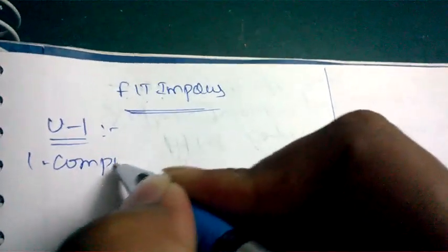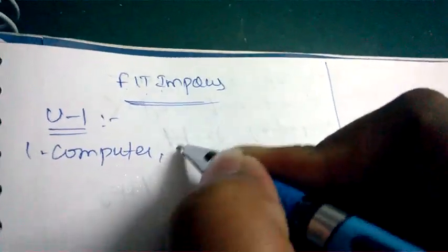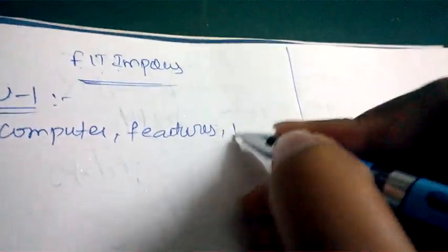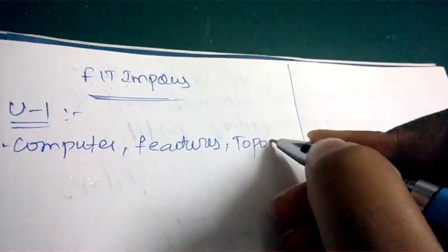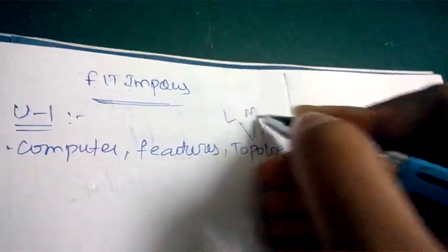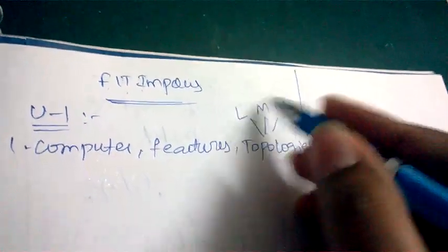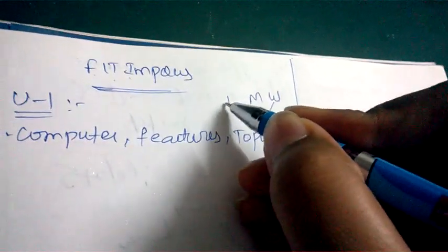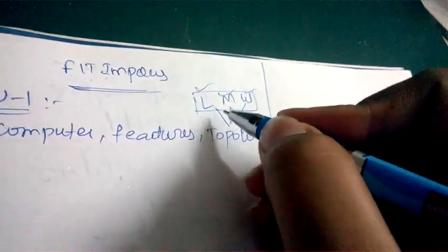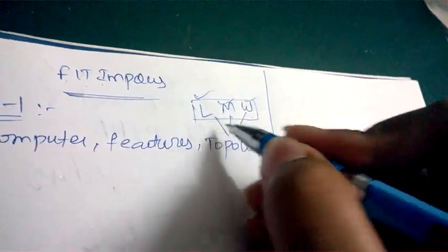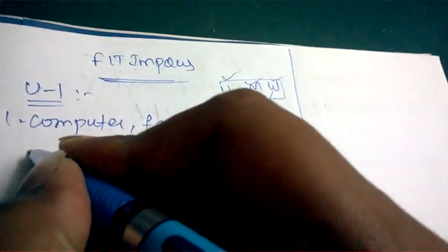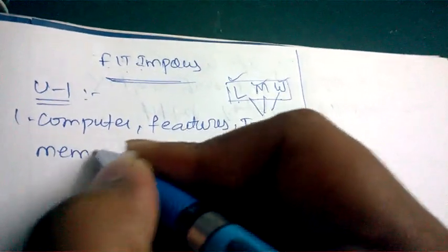Coming to Unit 1, the first important question is: define computer and what are the features of computers. The next important topic is different types of topologies — topologies are nothing but LAN, MAN, and WAN. This is a very important question, and they may ask you to define LAN, MAN, and WAN separately, or to differentiate LAN, MAN, and WAN.